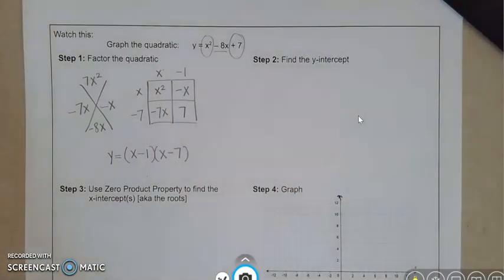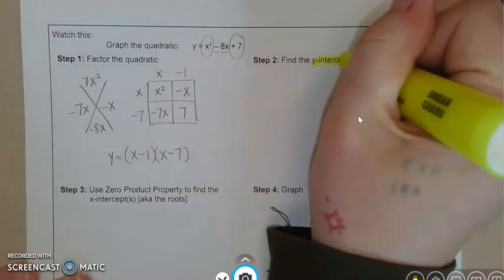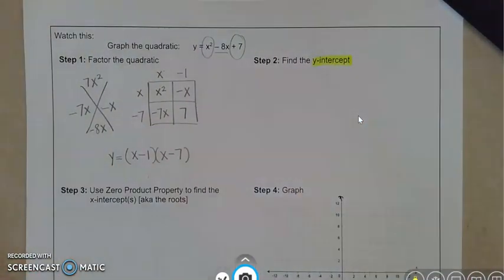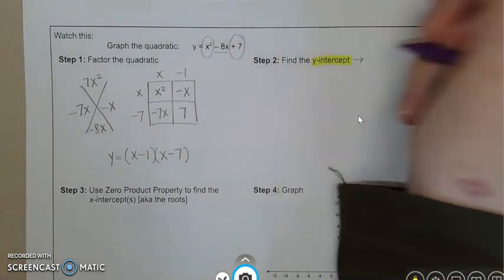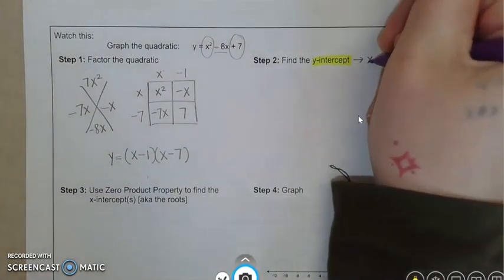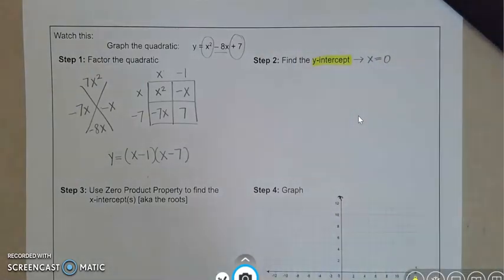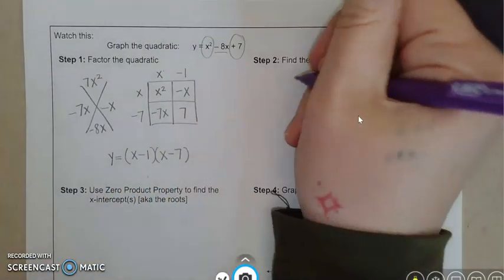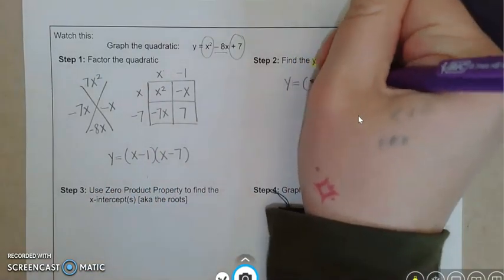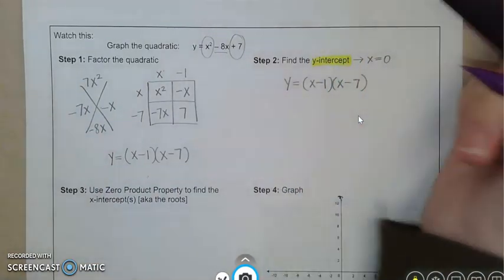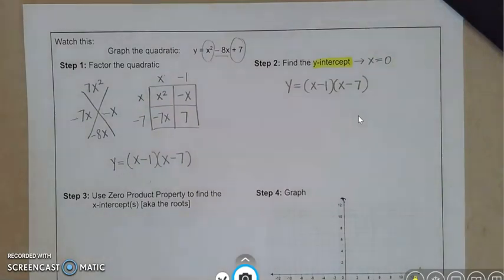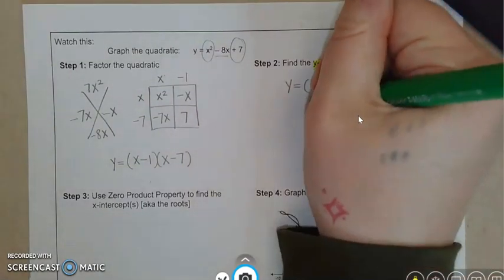We could go to step number two which says to find the y-intercept. So one important fact that we have to remember with finding the y-intercept is that with the y-intercept, this is where it crosses the y-axis, the x equals zero for the coordinate. So I'm going to take my factored quadratic and everywhere that I see an x I'm going to put a zero.